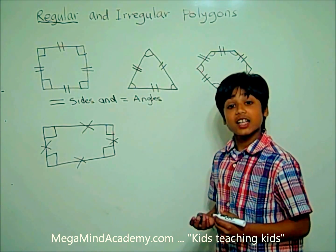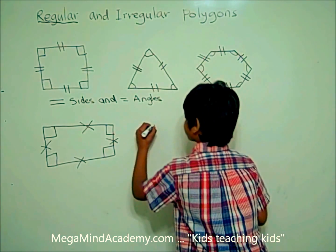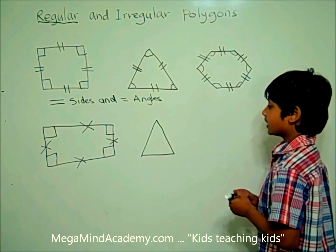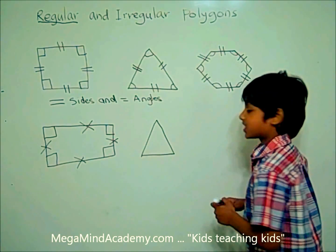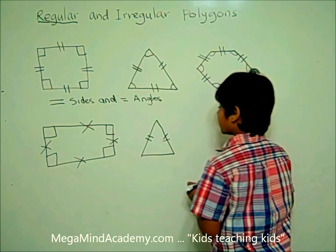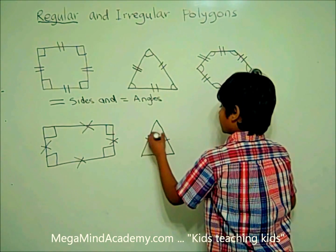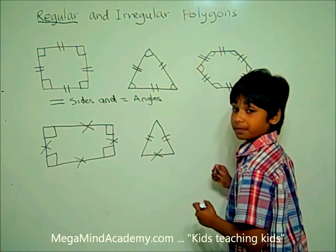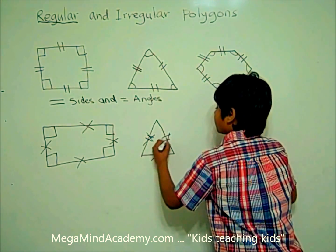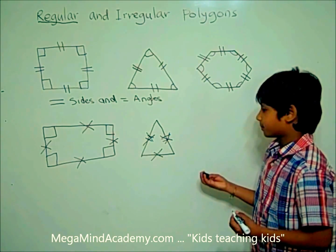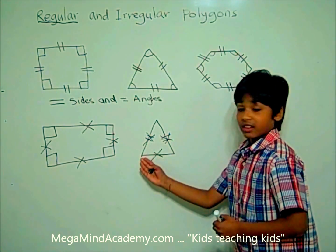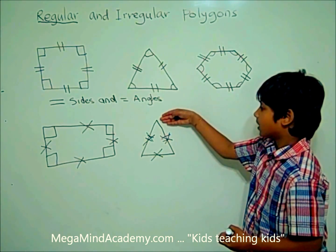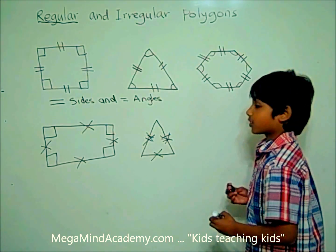What about an isosceles triangle? In an isosceles triangle, these two sides are the same, but they are not the same as this side. So all the sides are not the same. These two angles are the same, but they are not the same as this angle. So these angles are not the same.